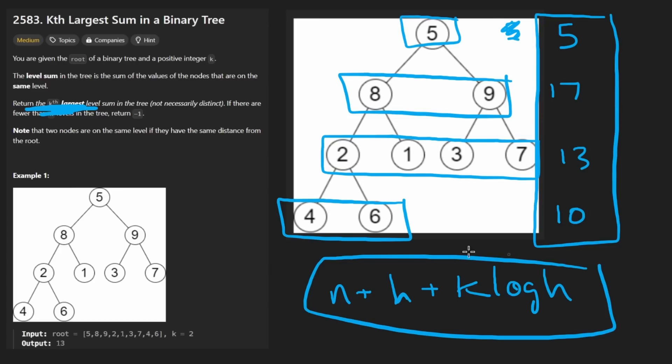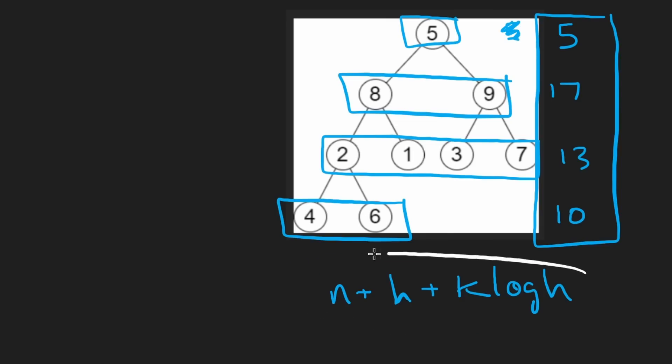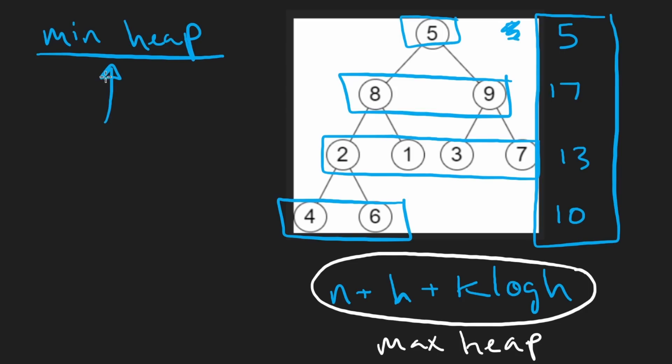So this max heap approach is valid, but there is one more approach we can take. It's a little bit clever. It involves using a min heap. And I'm going to leave this here. This is the max heap time complexity, and we're going to compare it to the min heap solution. So the min heap solution is going to be kind of clever. The idea is that we're going to maintain a minimum heap of size k. It's always going to be less than or equal to k.